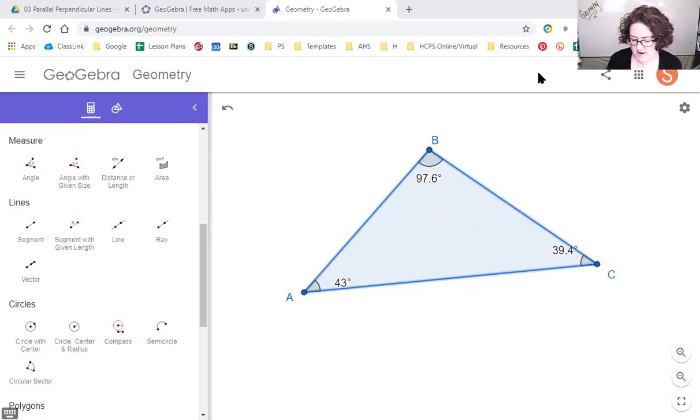Looking at the triangle ABC that I've created, we have three angles: 43 degrees, 39.4 degrees, and 97.6. We can see pretty clearly on this triangle which side is the biggest. Side AC, the bottom side, is the biggest. Which side do you think is the smallest? That one's a little harder to determine.